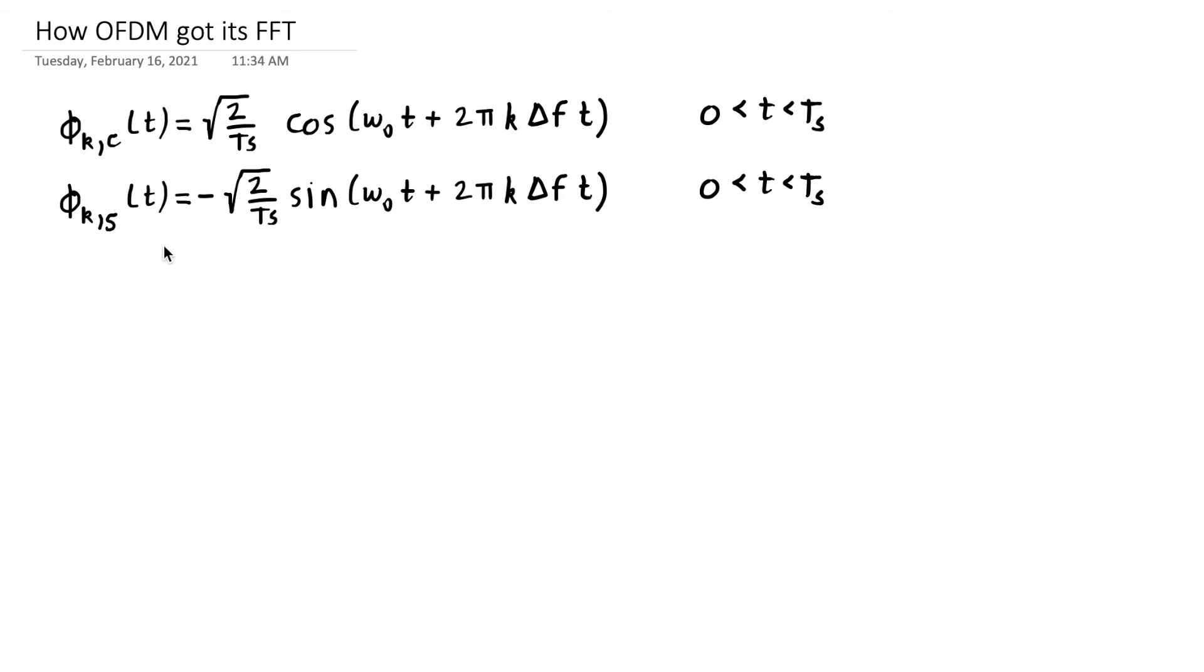In the last segment, I talked about the subcarriers of OFDM, how each one has two basis functions. We're going to call them C and S. At the kth subcarrier, we've got a square root of two over T_S times a cosine at omega_0 plus 2π times k times ΔFt and a sine at the same frequency. These are defined between zero and T_S and zero otherwise.